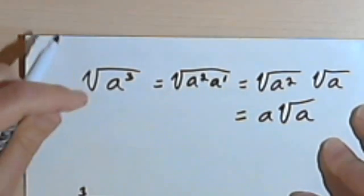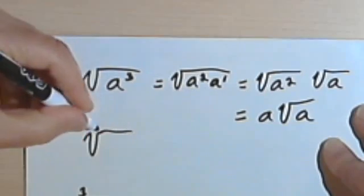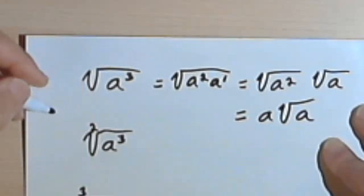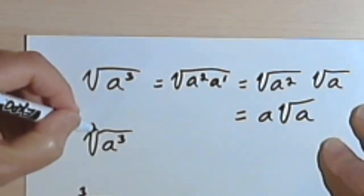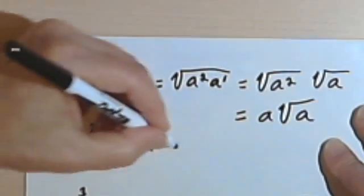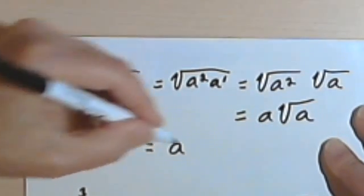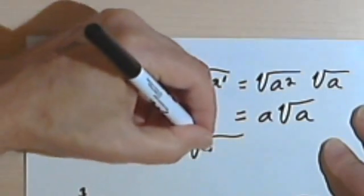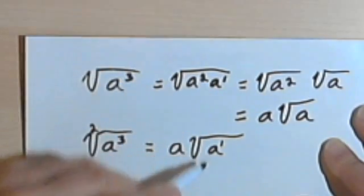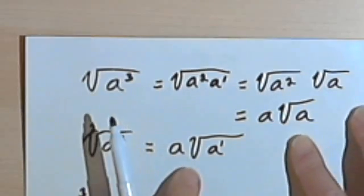Using the trick of dividing the index into the exponent, we can do this a lot faster. The square root of a to the third: my index is 2. I divide 2 into 3 — that goes one time, so I know I've got an a. But there's a remainder of 1. The remainder means you still have a variable under the radical sign, and that remainder will be the exponent for that variable. Same answer both ways.